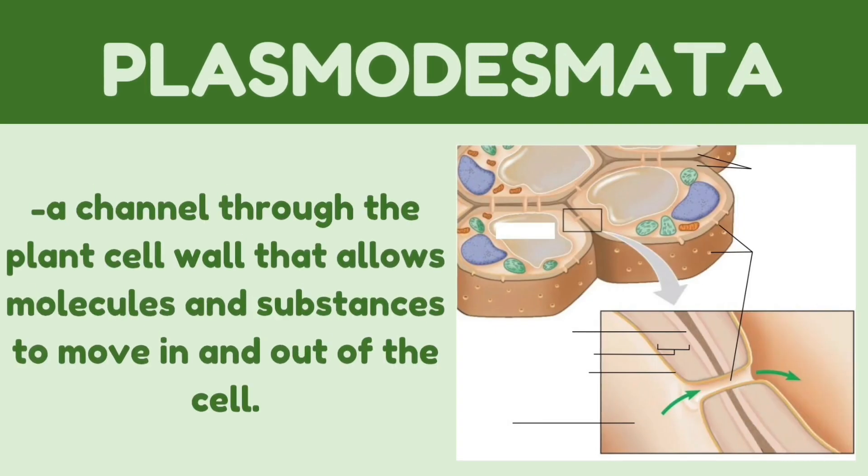Plasmodesmata is a channel through the plant cell wall that allows molecules and substances to move in and out of the cells. Plasmodesmata acts like a bridge that helps in the transfer of nutrients and other chemicals from one cell to another. This is unique to plants and algae, where it is essential for growth, since plant cells are immobile or stationary, in contrast to animal cells.